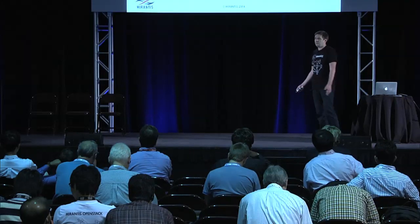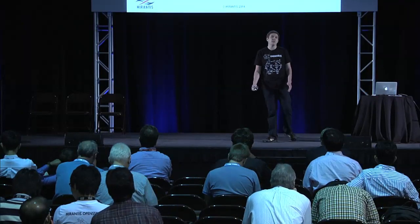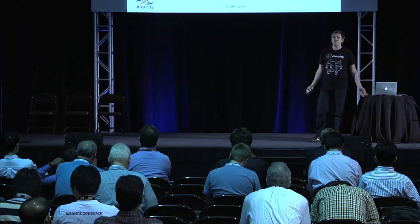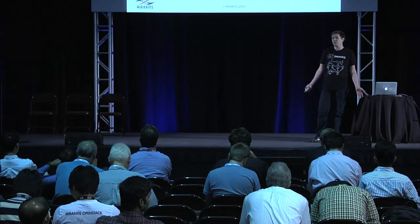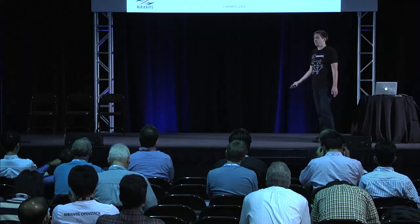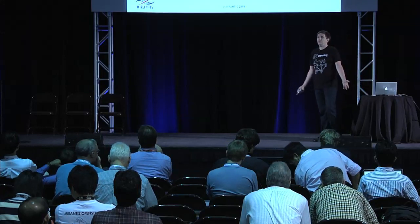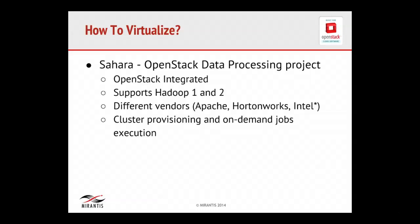When we talk with customers about Hadoop on OpenStack, they usually understand well why we need it for test and stage environments, but they still have concerns about production. The main concern is performance. The main goal of this talk is to measure the cost of migration from bare metal to an OpenStack cluster. Virtualization gives more flexibility, and for OpenStack there is the Sahara project — data processing as a service — which allows provisioning Hadoop clusters and running on-demand jobs on them.